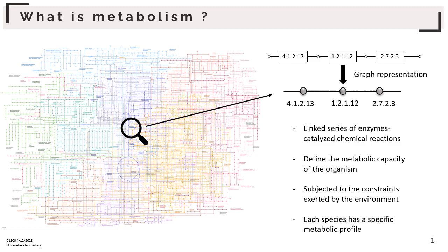Metabolism is a linked series of enzyme-catalyzed chemical reactions that occur in the cell. Enzyme activity is identified with a numerical classification called the EC number, based on the reaction catalyzed by the enzyme. This series of reactions can be represented as a graph where nodes represent enzyme activities, and two nodes are connected if they share the same compounds in their catalyzed reaction.